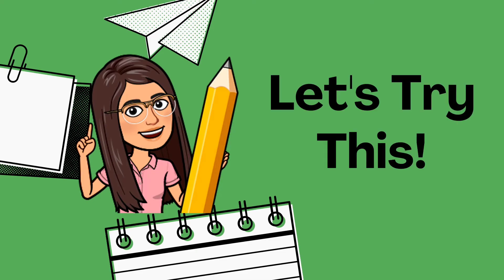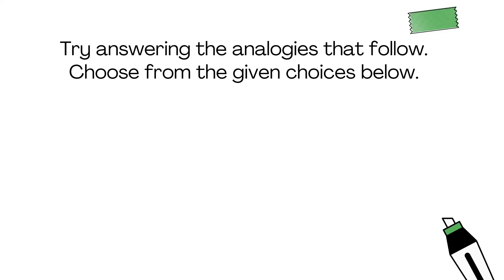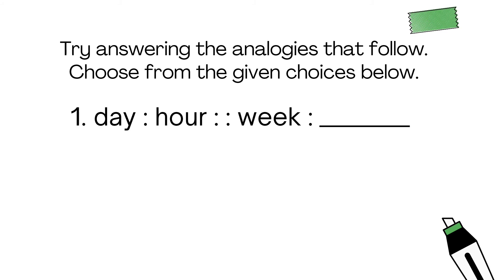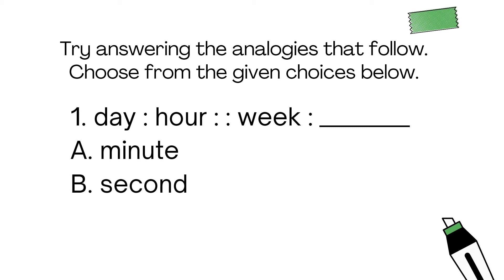Now that we're done, let's try this activity. Get a piece of paper and let's answer. I know you can do this. Try answering the analogies that follow. Choose from the given choices below. Number one: day is to hour as week is to blank. What do you think is the correct answer? Letter A, minute. Letter B, second. Letter C, month. Or Letter D, day.